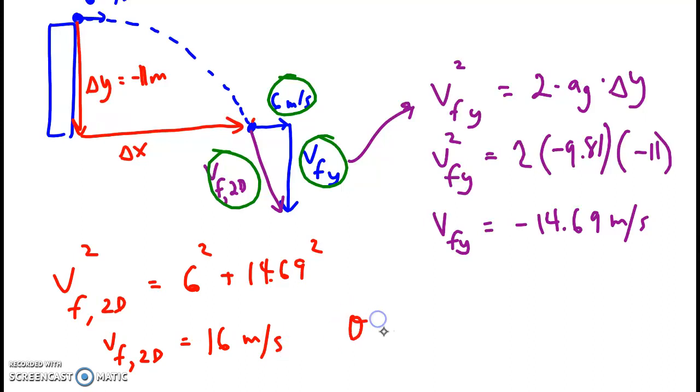We could find the angle to get the direction using inverse tan. We do opposite over adjacent. So we would do the y over the x, which is 6.